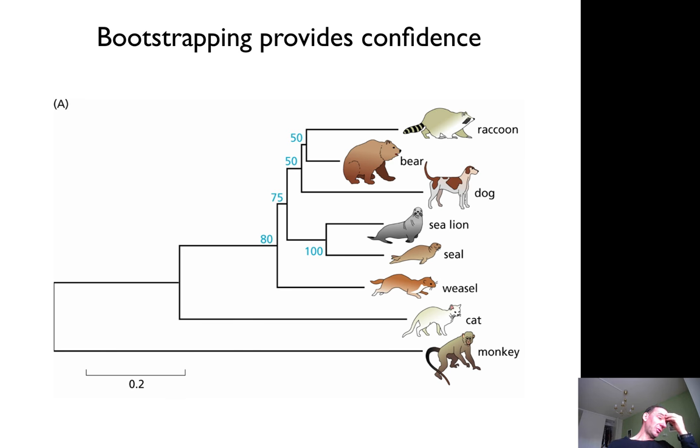You have some measure of the distance between them. Often, if you make the tree using different data or datasets, you can get different trees. If you represent this by making 100 trees, how many times do you see the same split? In this case, the raccoon-bear-dog split is only seen in half of trees, so it's not reliable. On the other hand, the sea lion-seal split is seen in 100% of cases, so it's more reliable.